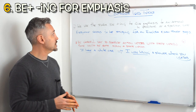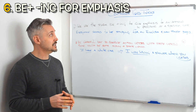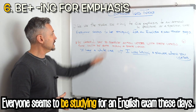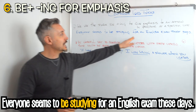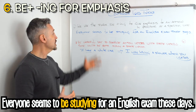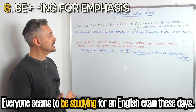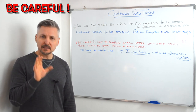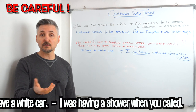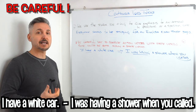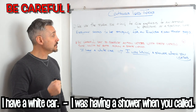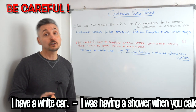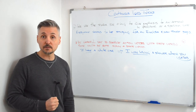For the last usage, we use the form 'be' plus -ing to give emphasis to an action in progress at a specific time. Like my example: 'Everyone seems to be studying for an English exam these days.' I give emphasis to this fact. Be careful not to confuse state and action verbs. Sometimes they can be both, like the verb 'to have.' 'I have a white car' — I possess, I own. Versus 'I was having a shower when you called' — here 'have' takes part of an expression: 'to have a shower.' If you want to watch a lesson on stative or dynamic verbs, you can click here.